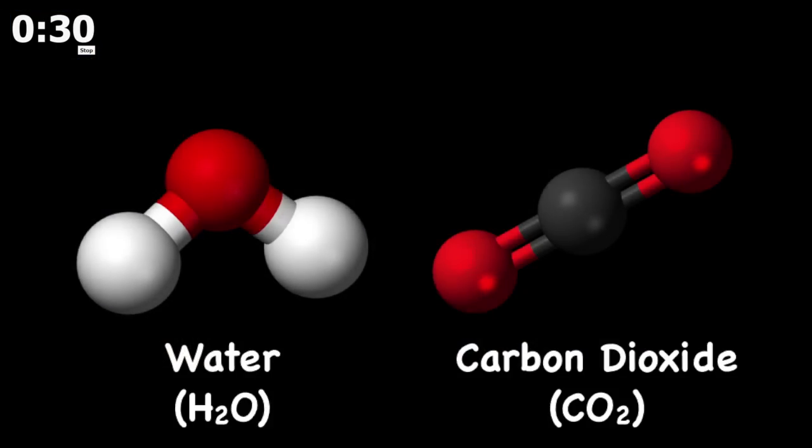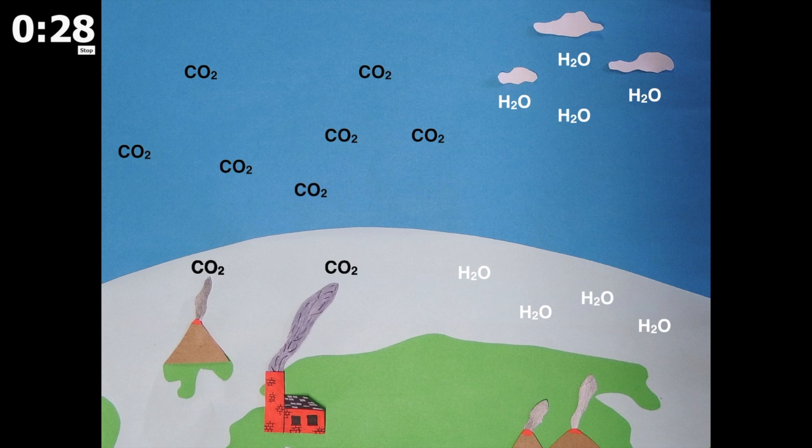The two most abundant gases are water and carbon dioxide. However, water cycles quickly through the atmosphere, so levels of it remain roughly constant. This means CO2 is the most important gas for influencing temperature.